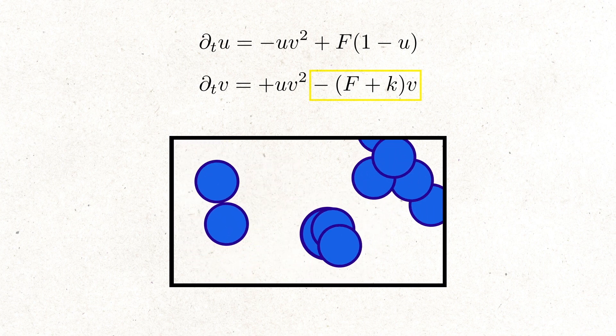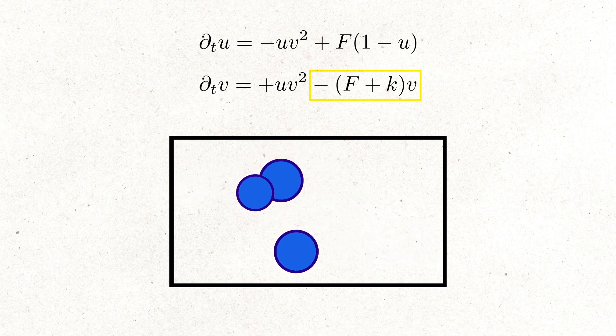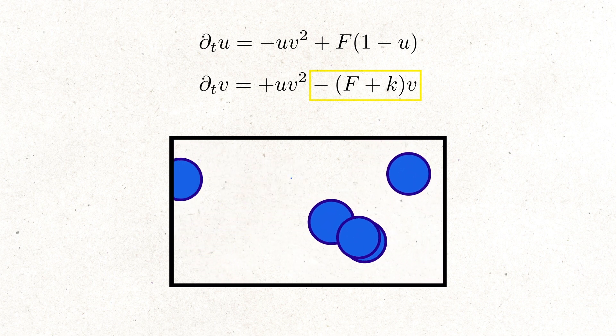So the removal of substance V is always faster than adding the substance U, and if we have a lot of substance V, more of it will be removed, and conversely, if we have barely any substance V, less of it will be removed.